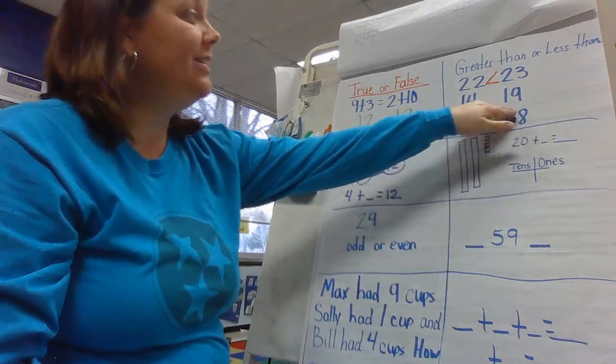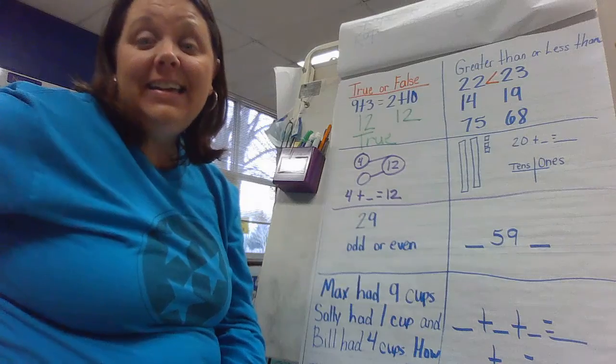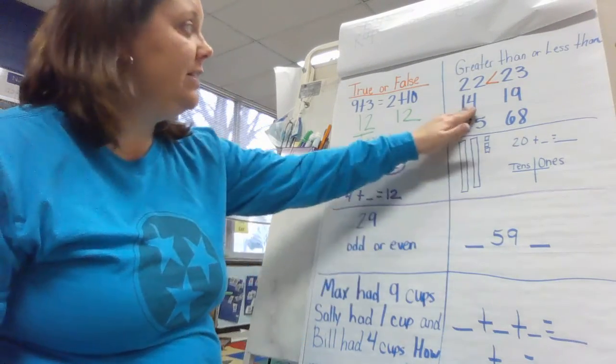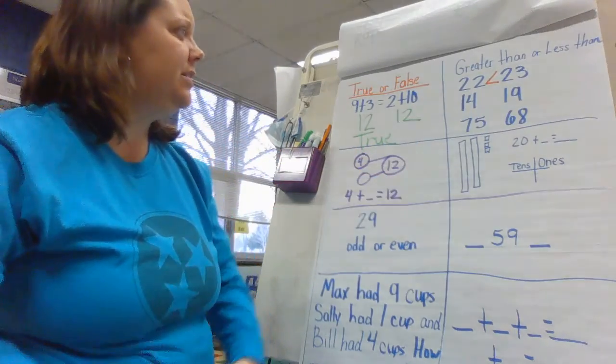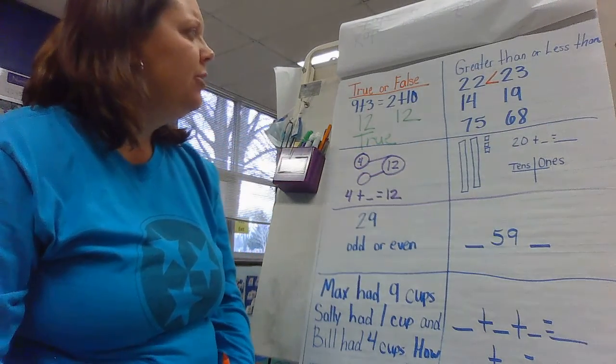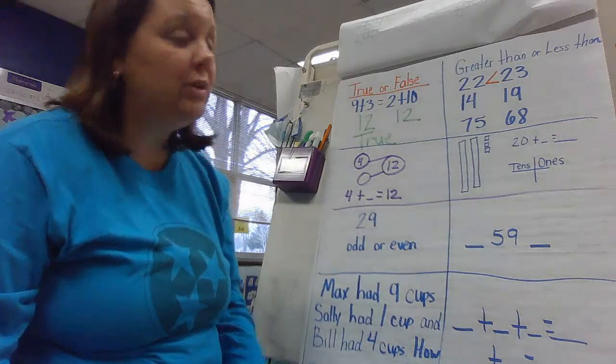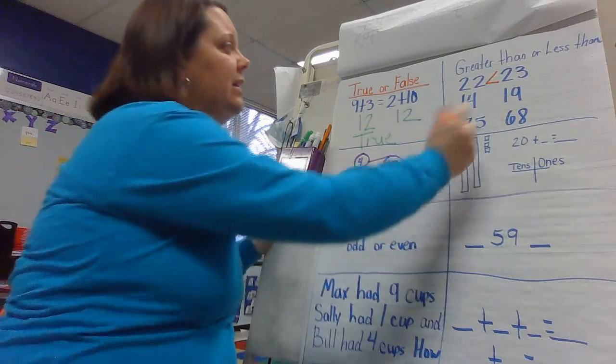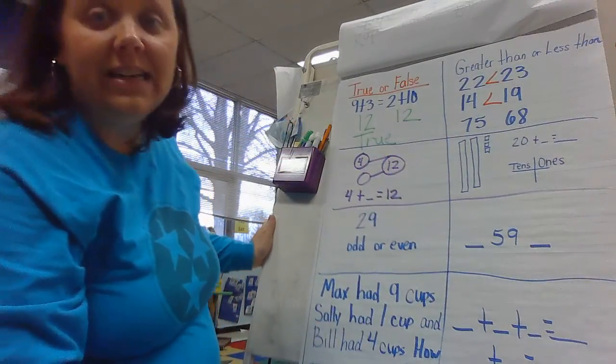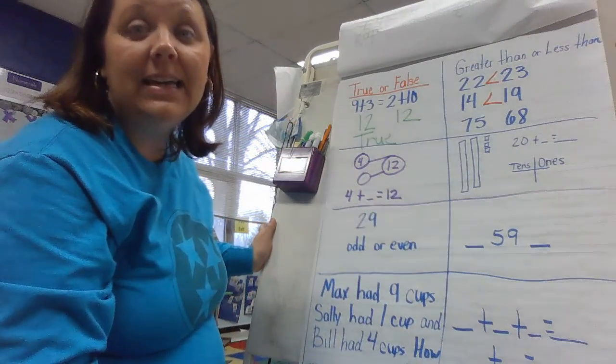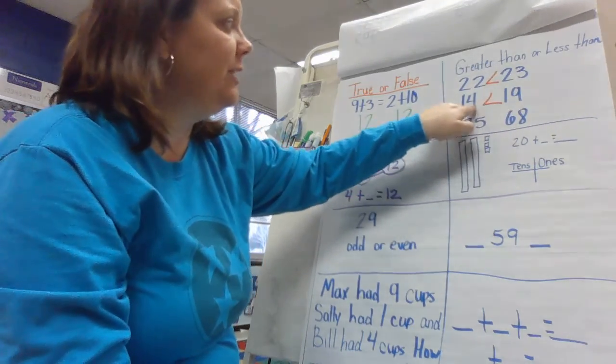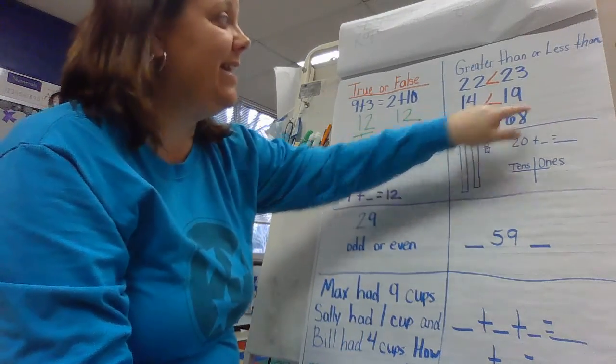14 and 19. Again, the number in the tens place is the same. Both of these have a 1, a digit, a 1 digit in the tens place. What should I do? Well, I have to go to the ones place. We have a 14 and a 19. We have a 4 and a 9. So again, we're going to say less than. 14 is less than 19. We're looking at the value of the ones place. A 4 is less than a 9.